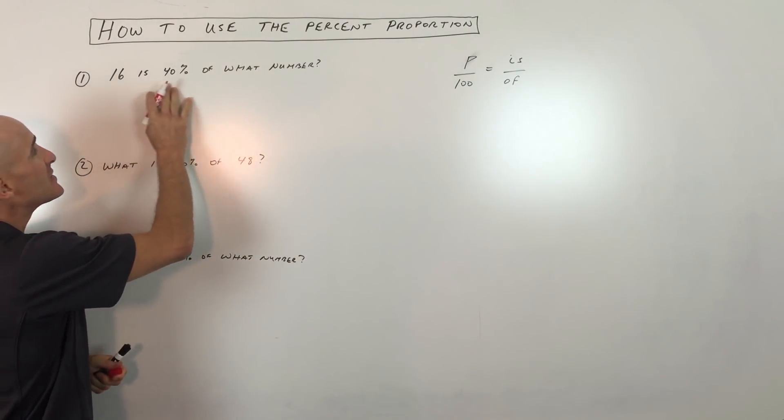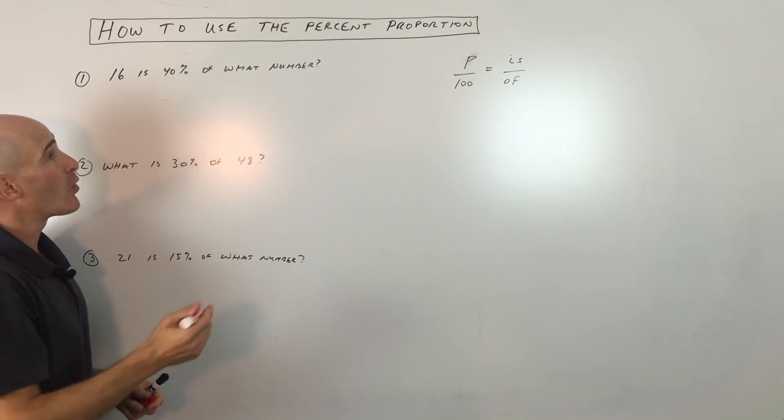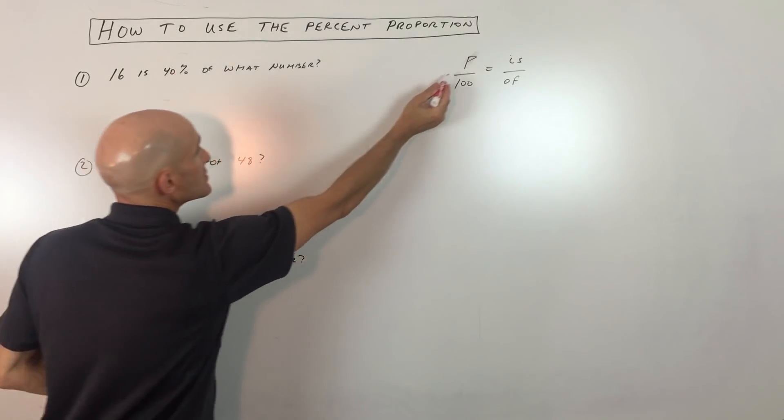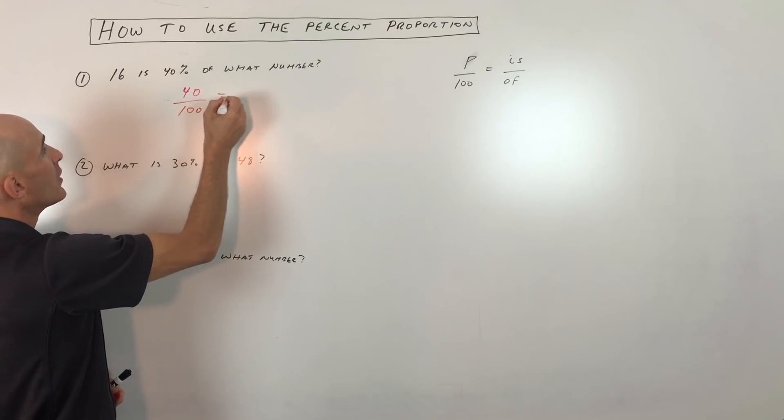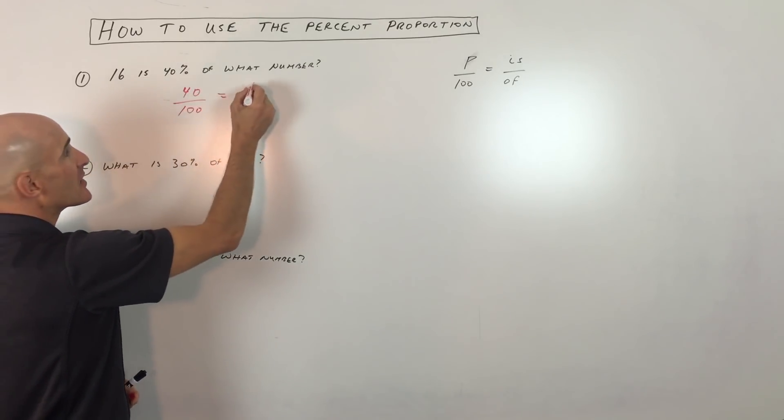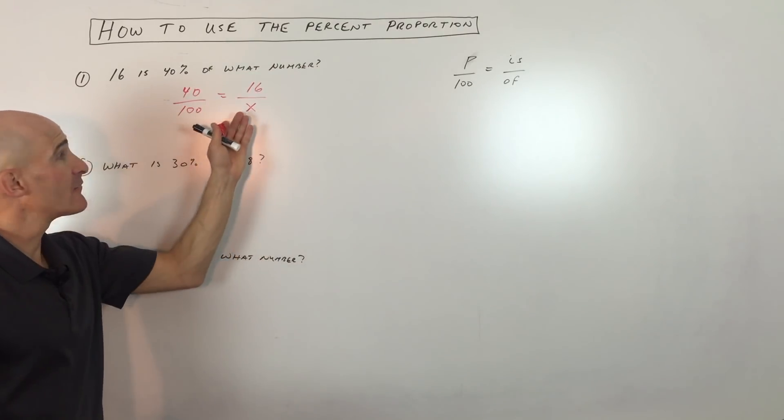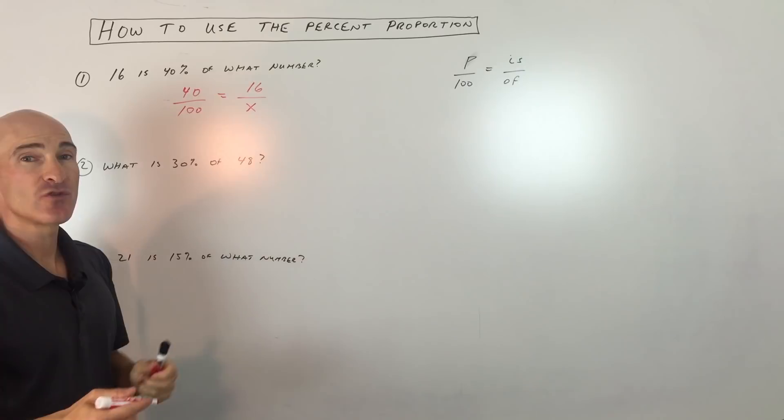It says 16 is 40% of what number? So we've got 40%, so that's going to go in for P here. So we have 40 over 100. 16 is, that's the part, of what number, meaning out of what number. We don't know what that is, so we're going to make that a variable X.